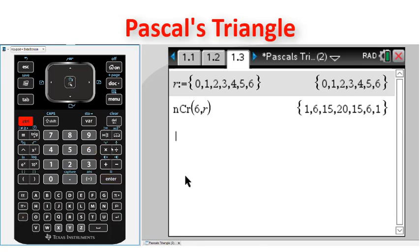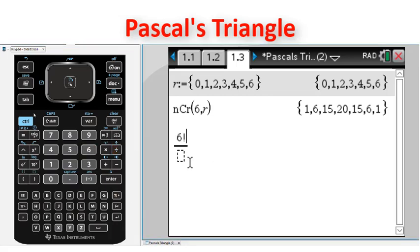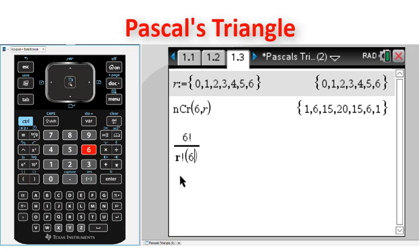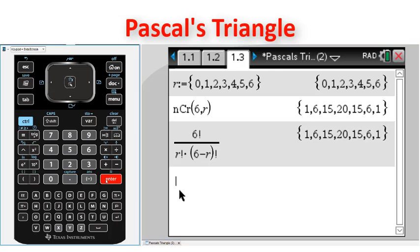Or we can use the combinatorics formula. To generate longer or larger rows, you can also use the sequence command embedded within the ncr.